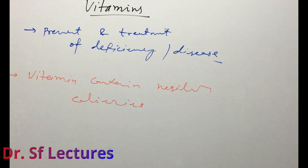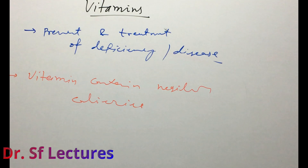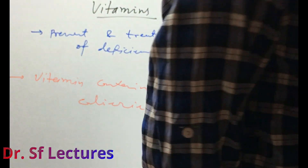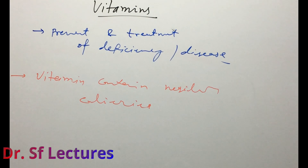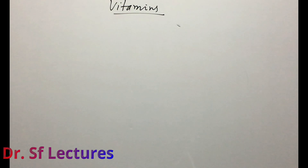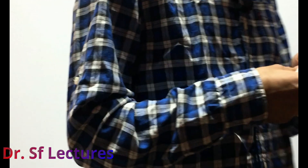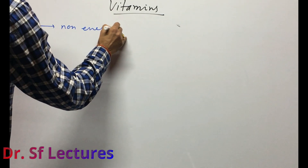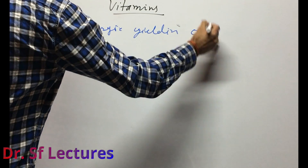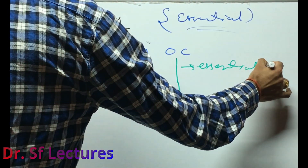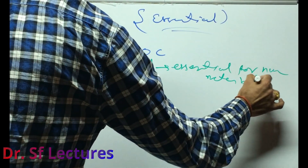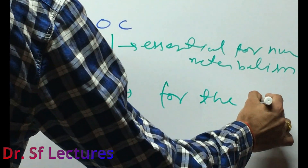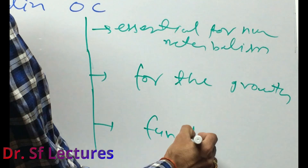Deficiency of vitamins can cause disease or symptoms in our body, and excess of vitamins can also cause disease. Our body cannot produce vitamins because all vitamins are essential organic compounds. The definition of vitamin: vitamins are non-energy-yielding organic compounds essential for human metabolism, growth, and normal function of our body.